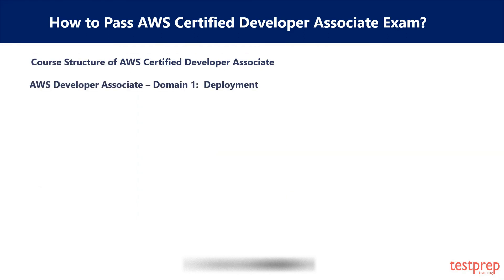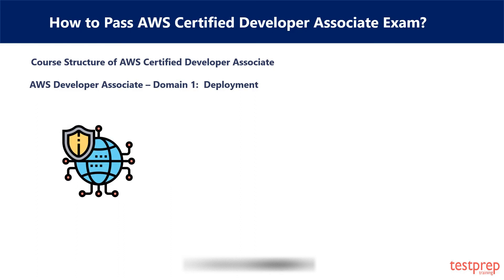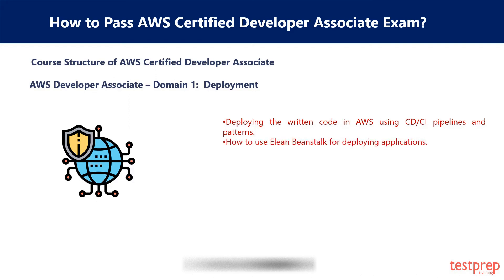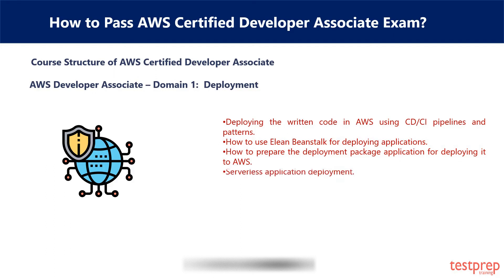Domain 1: Deployment. The Deployment domain in the AWS Developer Associate exam covers 22% of the total weightage, with topics such as: first, deploying written code in AWS using CD pipelines and patterns; second, how to use Elastic Beanstalk for deploying applications; third, how to prepare the deployment package application for deploying it to AWS; and fourth, serverless application deployment.